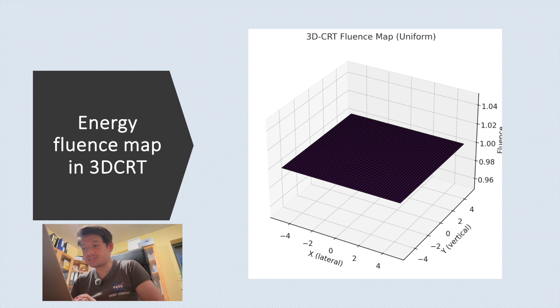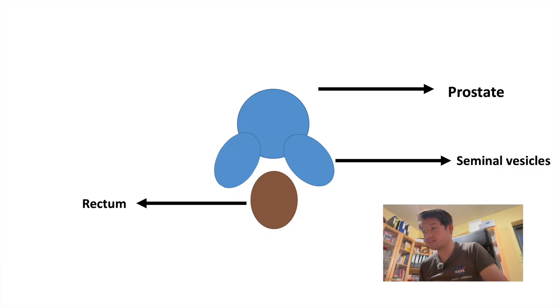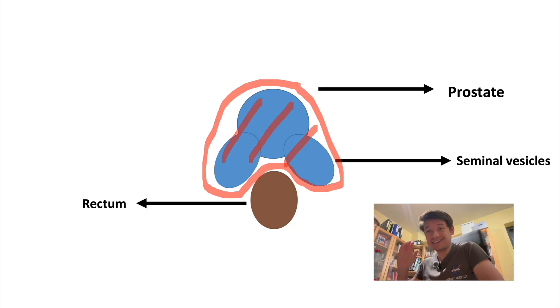Here is the corresponding 2D fluence map showing that in 3D CRT, the beam delivers a uniform fluence across the entire field. And here we see the prostate, the seminal vesicles, and the rectum positioned just behind the prostate. Let's say that we want to treat the prostate, so irradiate the prostate but spare the rectum.